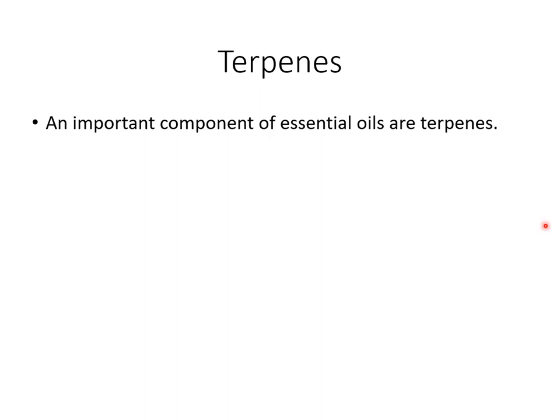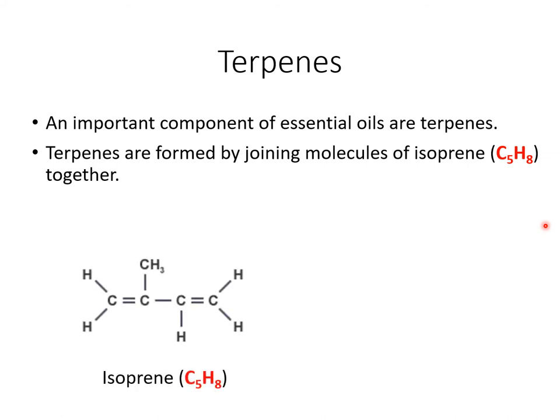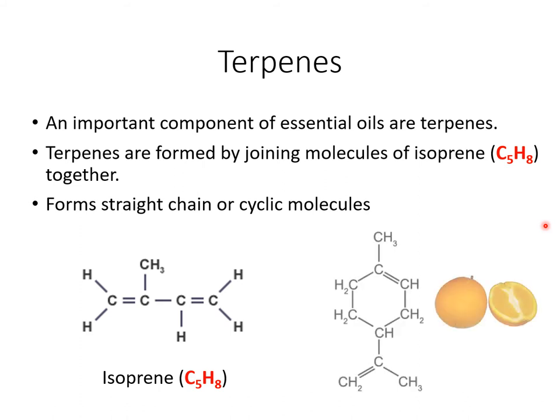The chemistry of essential oils: they contain something called a terpene, and a terpene is a combination of small units called isoprenes. An isoprene unit has the molecular formula C5H8 and a specific structure we need to be able to identify in chemicals. If you combine isoprene units together you form a terpene, and you can get different types — straight chain or cyclic molecules. For example, limonene is found in citrus fruits and has a really nice smell. It is a hydrocarbon and therefore volatile due to London dispersion forces.